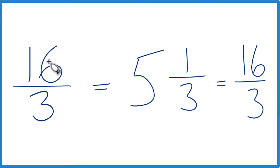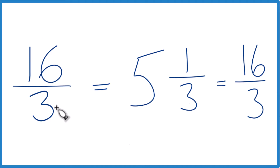So that's how you write 16 thirds as a mixed number. And like I said, it's already simplified — we really don't need to simplify it any further. This is Dr. B. Thanks for watching.